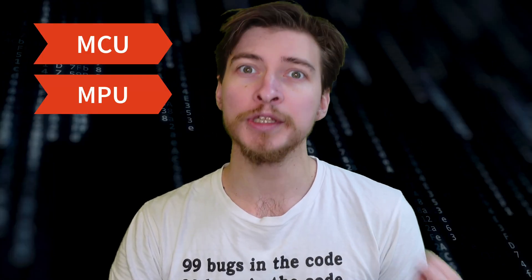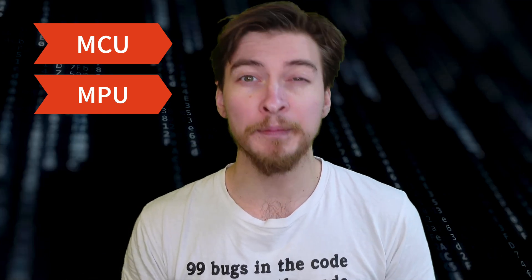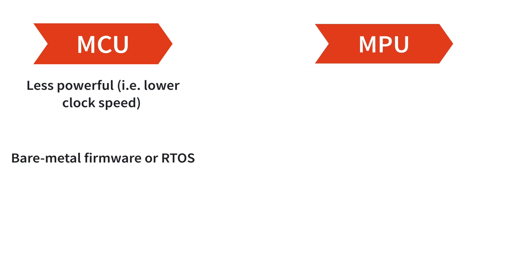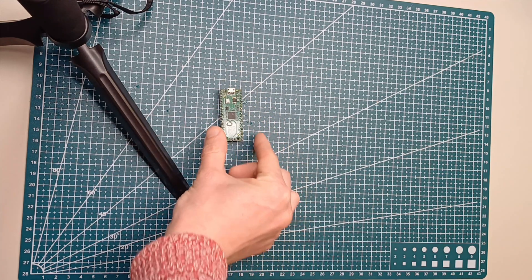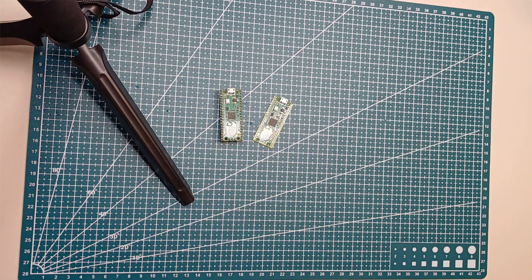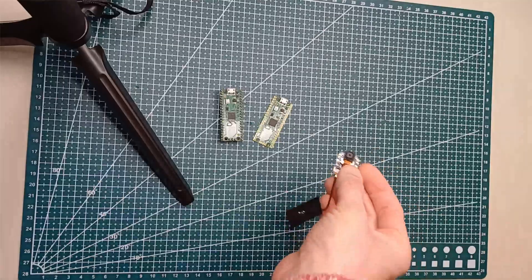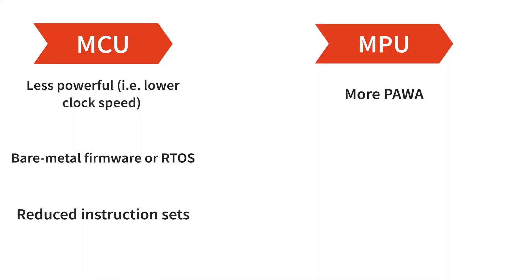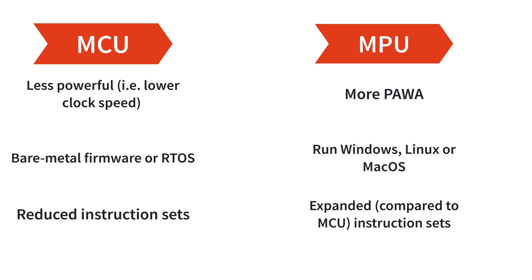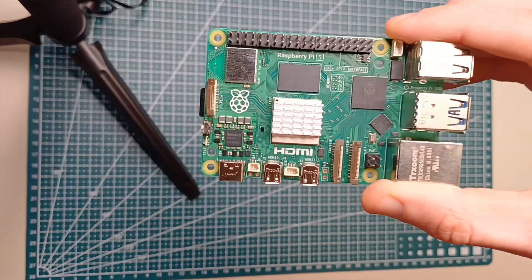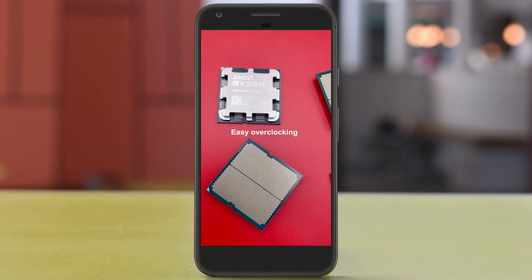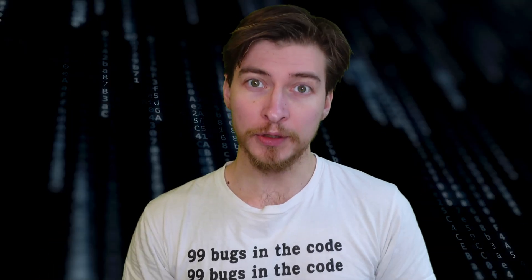There are two large categories of generic compute chips: MCUs and MPUs. The dividing line is becoming a bit blurry lately. In general, MCUs are less powerful — they run bare metal firmware or a lightweight OS like FreeRTOS and have a reduced instruction set. Examples include Raspberry Pi RP2040, RP2350, ESP32, and NRF52840. MPUs on the other hand are more powerful, capable of running one of the three big OSes. Examples include Broadcom BCM2712, Apple M1, and AMD Ryzen 7800. Those are general rules — of course there are exceptions.